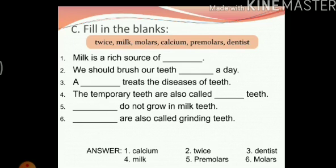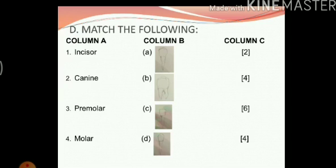Now we have match the following. Unlike other match the following exercises, this one is slightly different — it has three columns. In column A we have the four different kinds of teeth. In column B we have the structures of the teeth. In column C we have the number of each type of teeth in one jaw. Incisors are thin and flat, so the answer for 1 will be C.